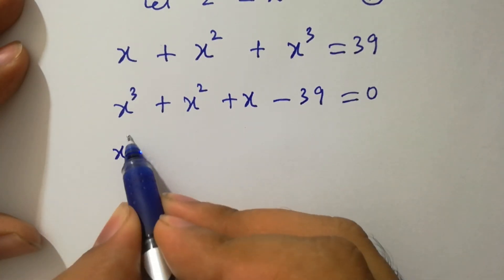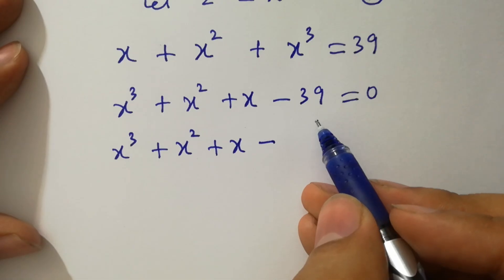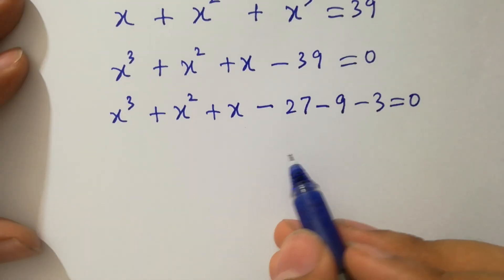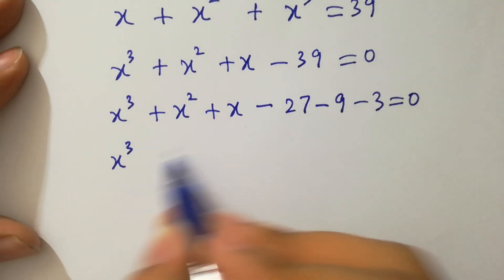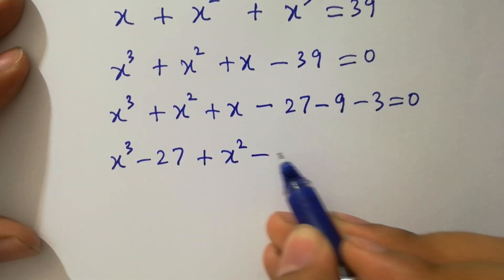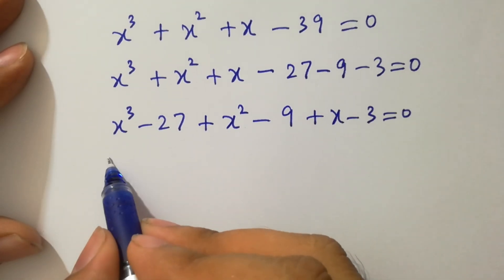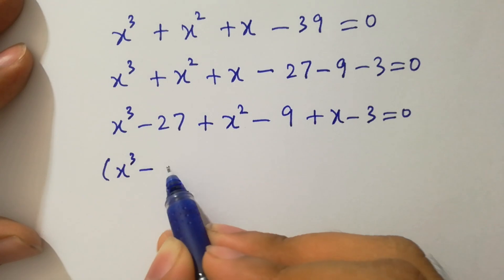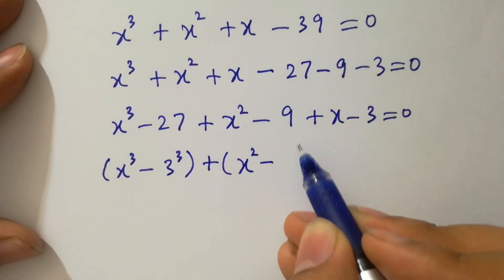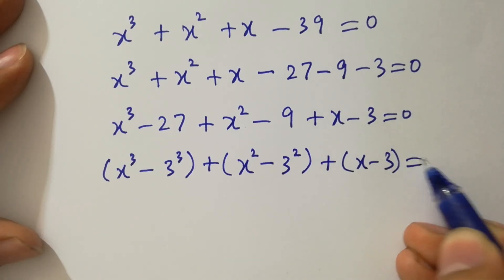It can be written as x cubed plus x squared plus x minus 39 equal to 0. x cubed plus x squared plus x minus 39 is same as minus 27 minus 9 minus 3 equal to 0. So we have x cubed minus 27 plus x squared minus 9 plus x minus 3 equal to 0.